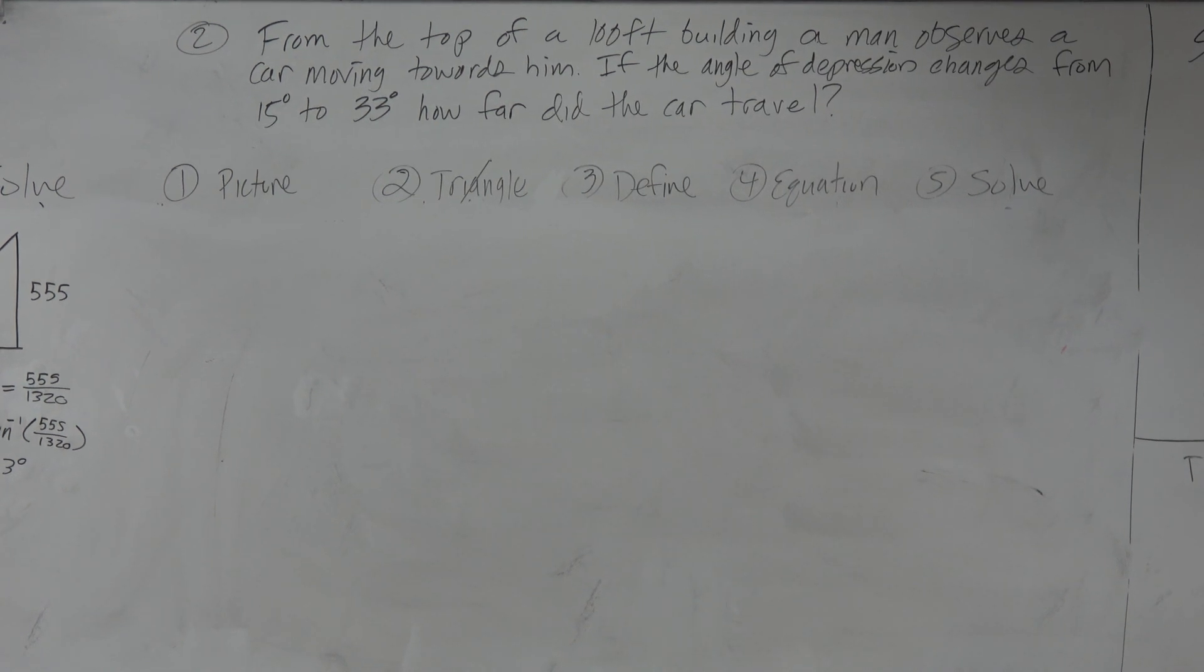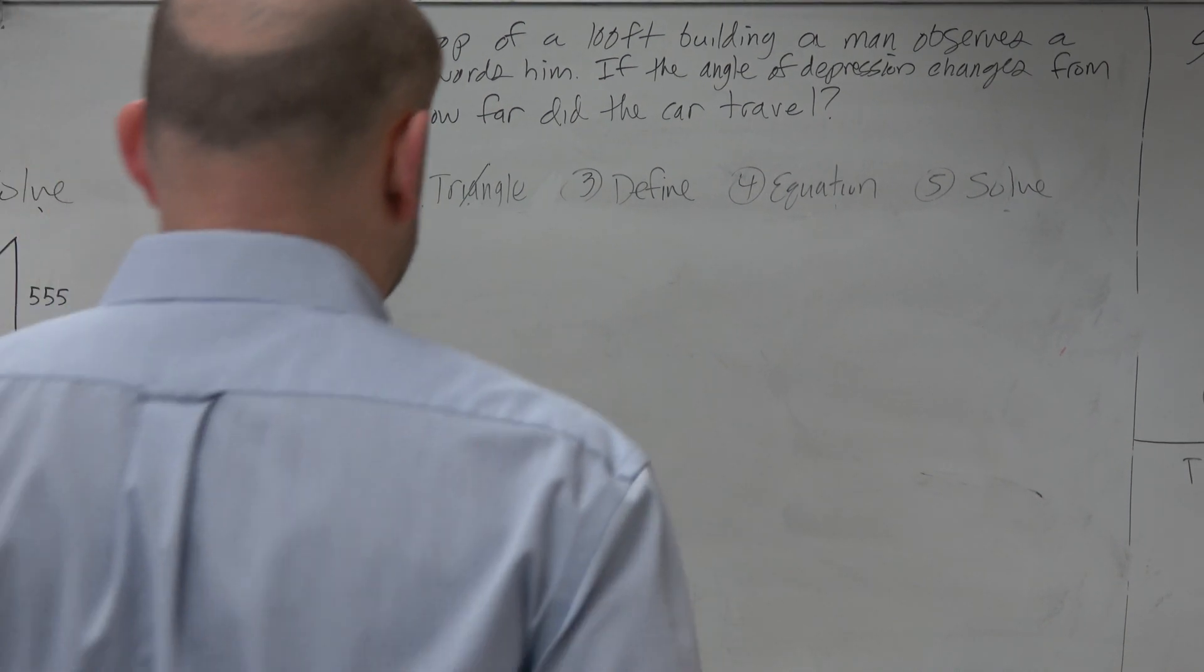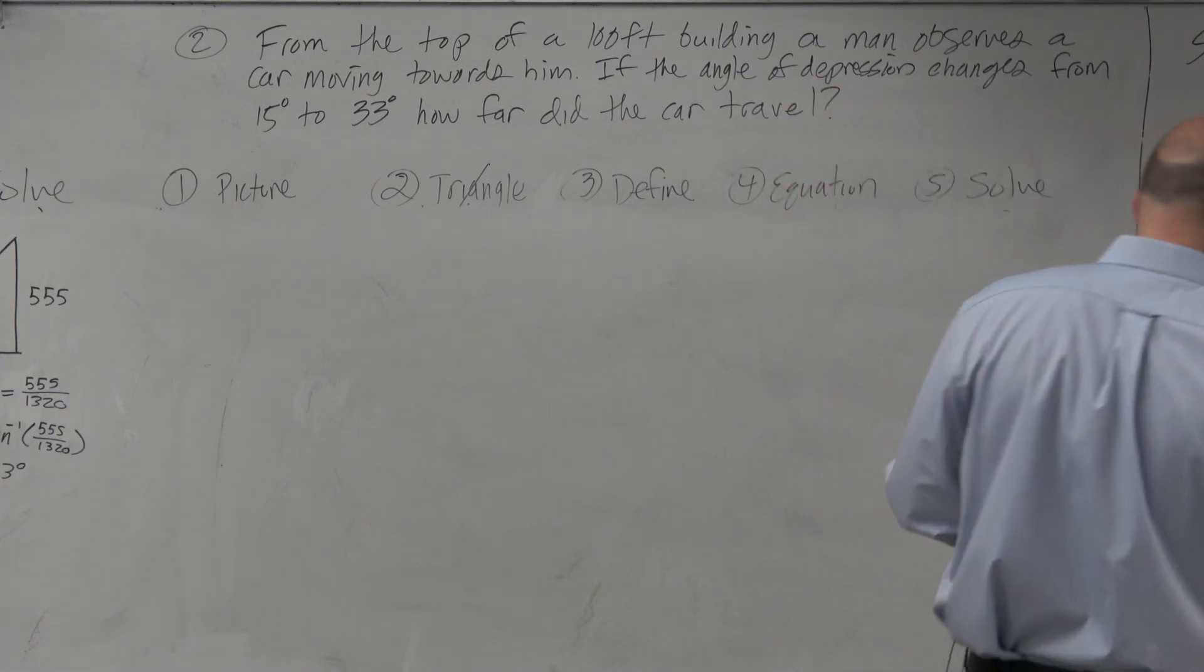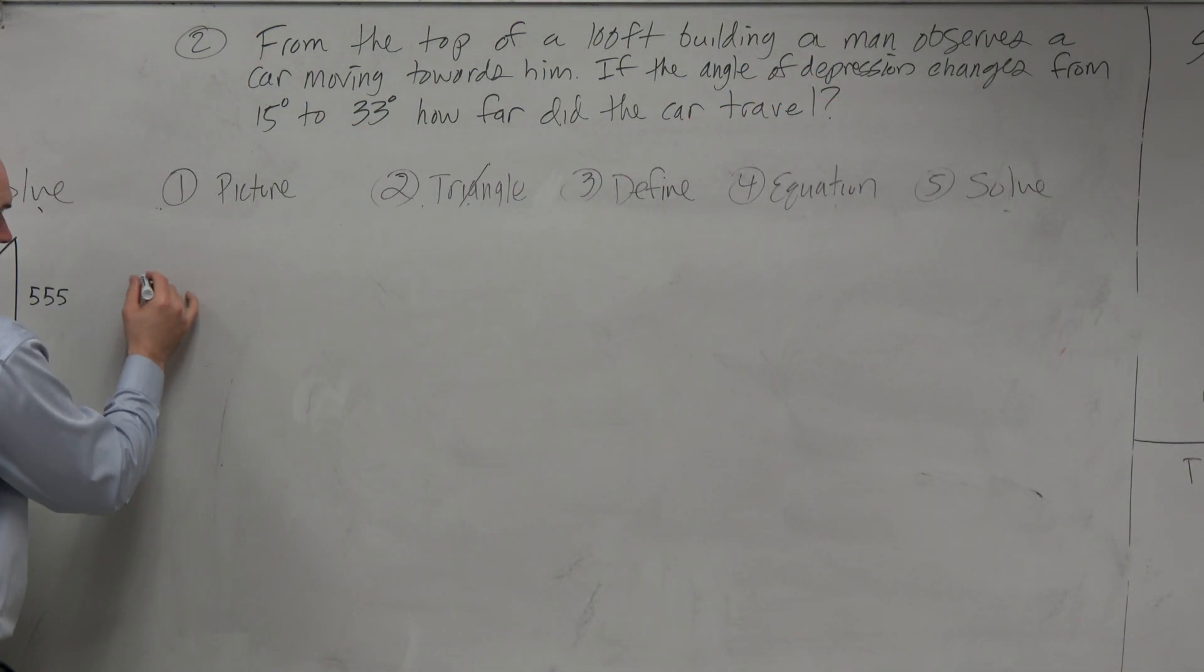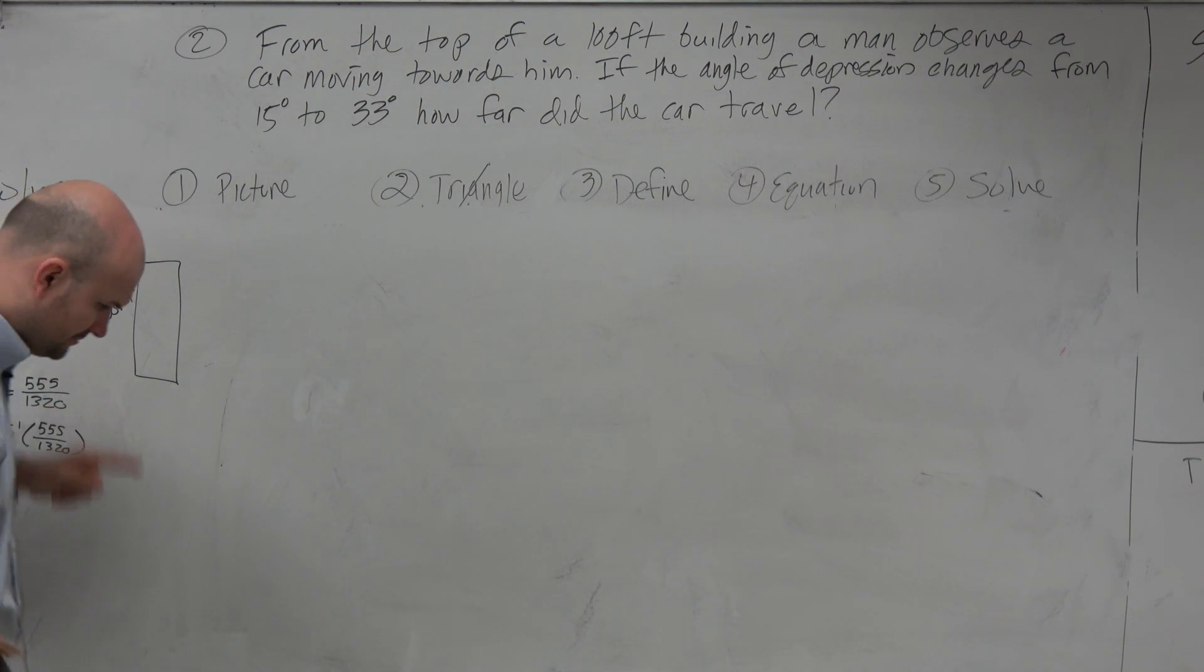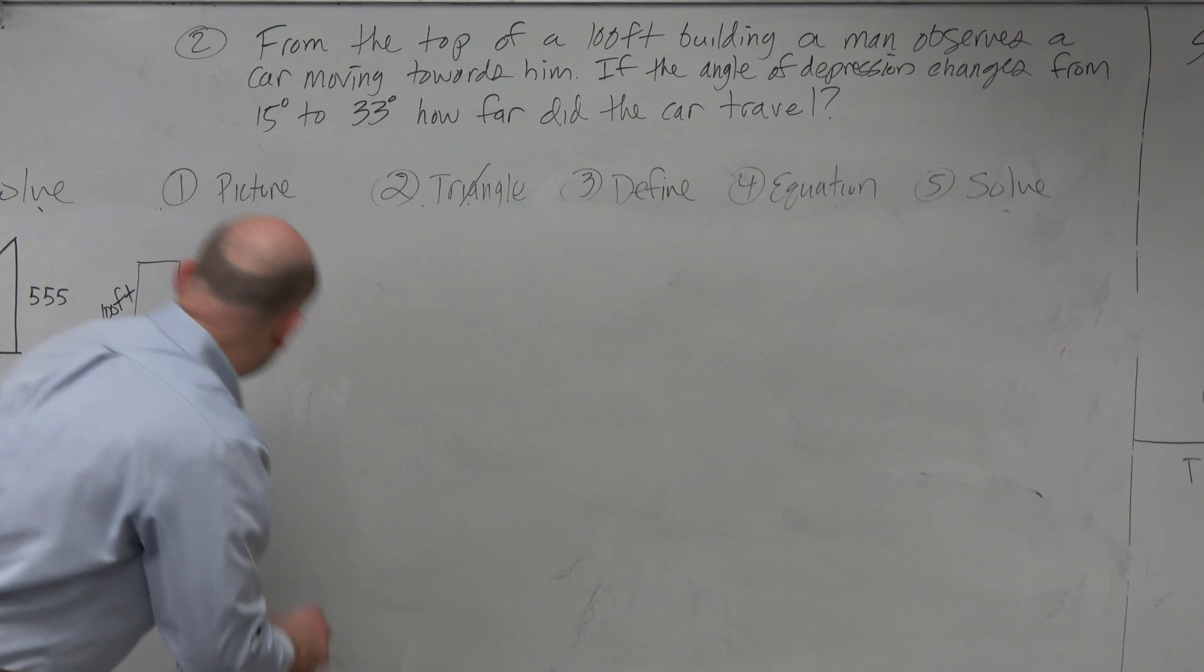I think to make sense of this, it would be to draw a picture. So we have an observer at the top of a building. So let's just draw a nice little building. And it's a 100-foot building, right? So we can say 100 feet. So we have this 100-foot building.